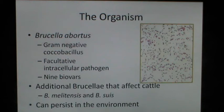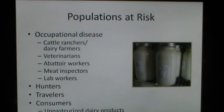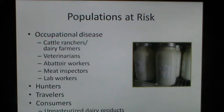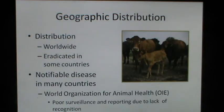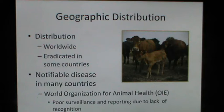The organism can persist in the environment. The disease is an occupational disease — cattle ranchers, dairy farmers, veterinarians, abattoir workers, meat inspectors, lab workers, hunters, travelers and consumers of unpasteurized dairy products are at risk. The disease has a worldwide distribution, has been eradicated in some countries, and is considered a notifiable disease in many countries. The World Health Organization for Animal Health states that poor surveillance and reporting due to lack of recognition has not eradicated the disease in some areas.